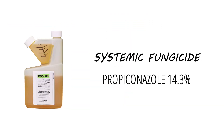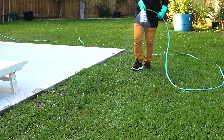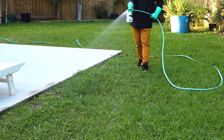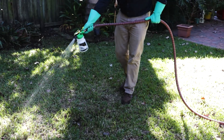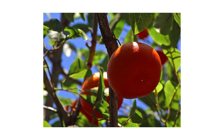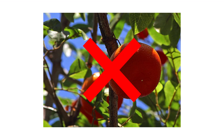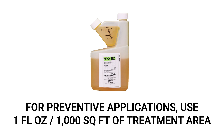Patch Pro is a systemic fungicide that contains the active ingredient propiconazole and is used to treat and prevent a wide variety of lawn and ornamental diseases like brown patch or leaf spot. Keep in mind that Patch Pro is only labeled to treat anthracnose in turf grass and in certain trees. Do not apply Patch Pro to fruit- or vegetable-bearing plants grown for consumption. To treat anthracnose in lawns, apply the labeled rate of 2 fluid ounces of Patch Pro per 1,000 square feet. For preventative applications, you can apply 1 fluid ounce per 1,000 square feet.